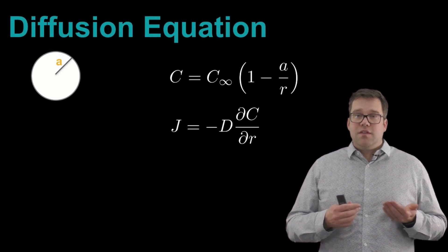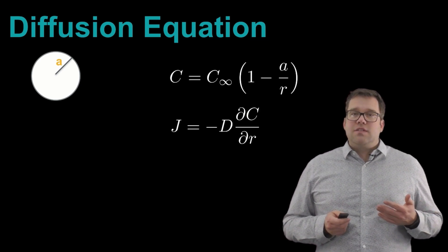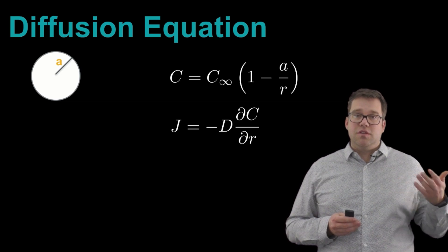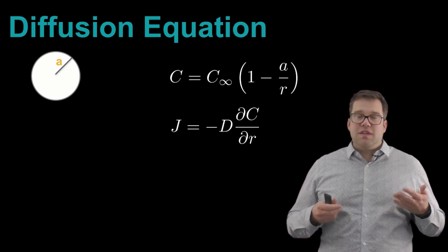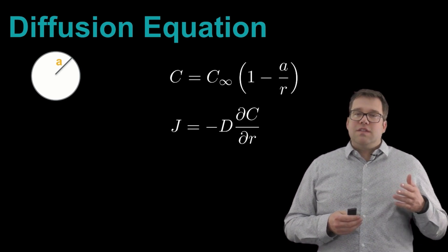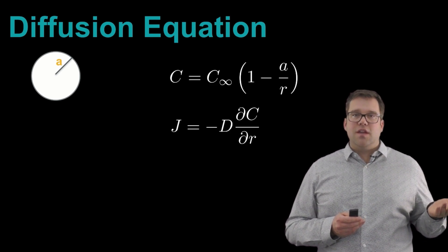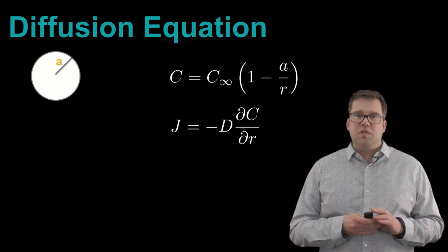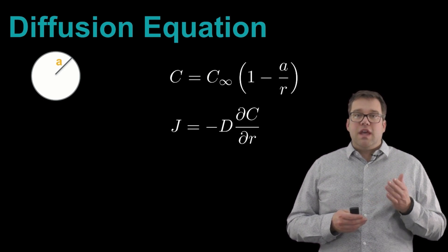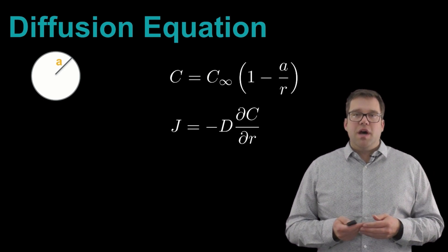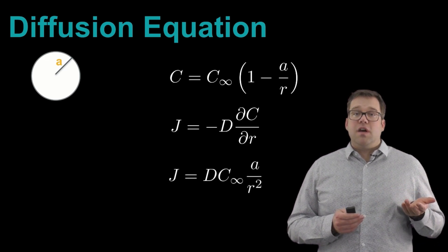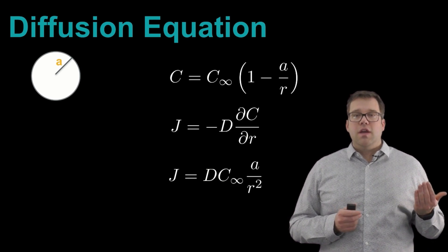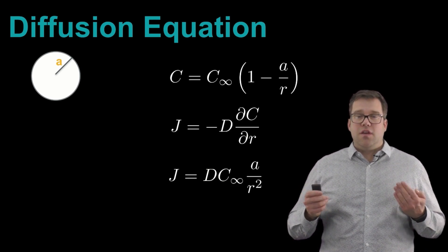Now what's nice is that we can take this concentration field and start to solve for the flux. So flux is defined, and you can do this from building up from basic diffusive processes. Flux is defined as negative the diffusivity constant times this gradient in the concentration with respect to r. And so if we take this derivative of dC/dr above, we find that the flux equals D times C infinity times the radius of the cell over the distance away from the surface of the cell squared.